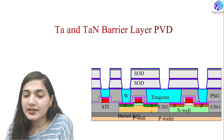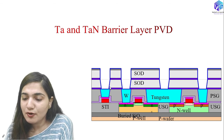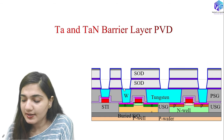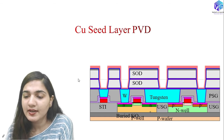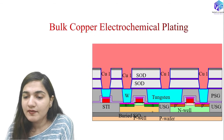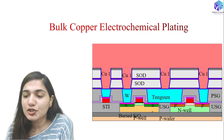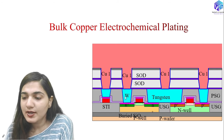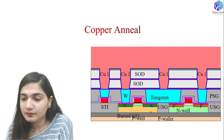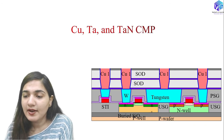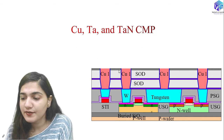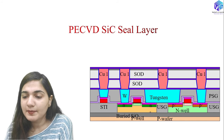Tantalum and tantalum nitride barrier layer PVD is deposited, followed by copper seed layer PVD. Bulk copper electrochemical plating (ECP) is then used for bulk copper deposition. After copper annealing and copper/tantalum/tantalum nitride CMP, a smoother surface is obtained, completing the first copper metallization layer.